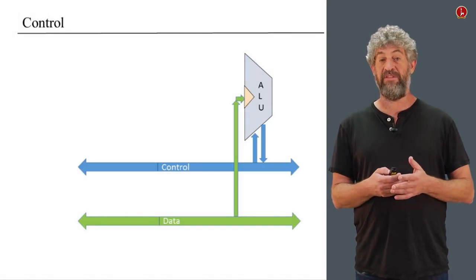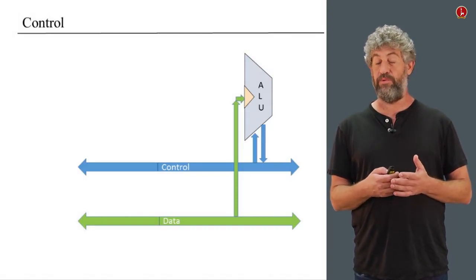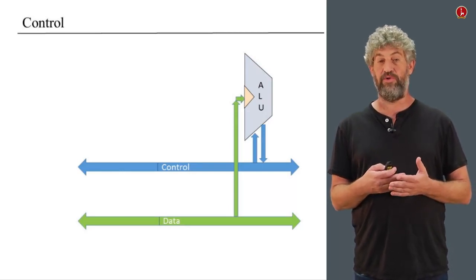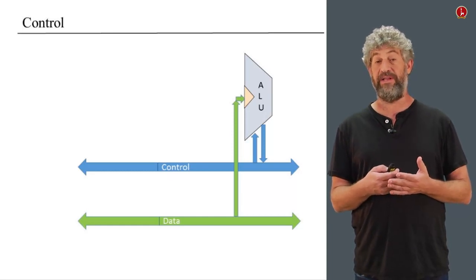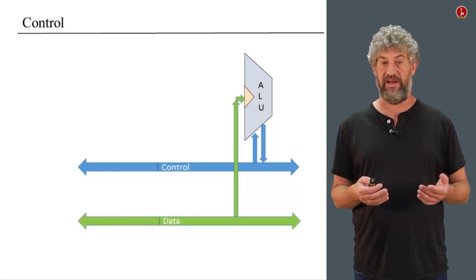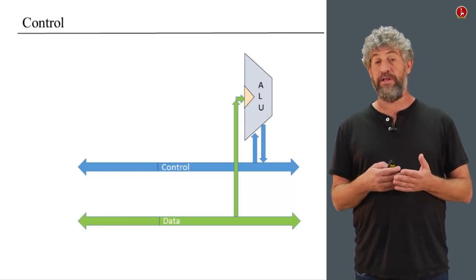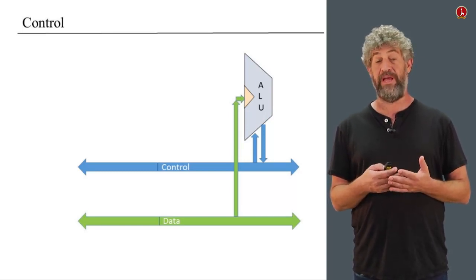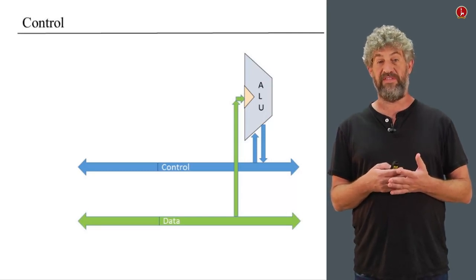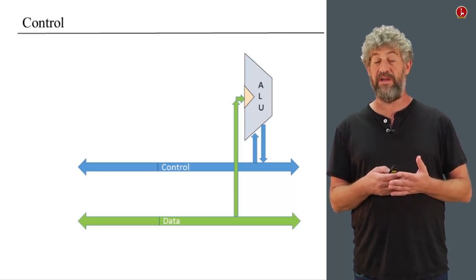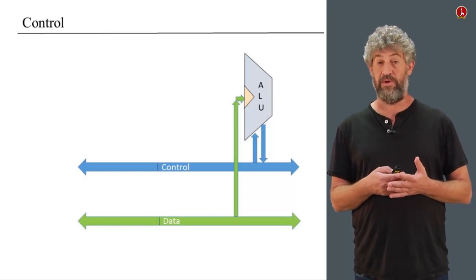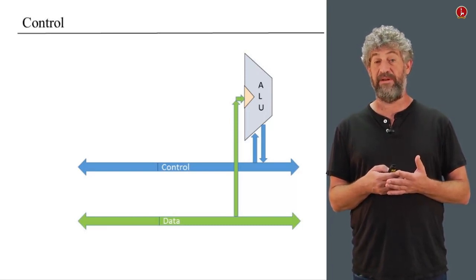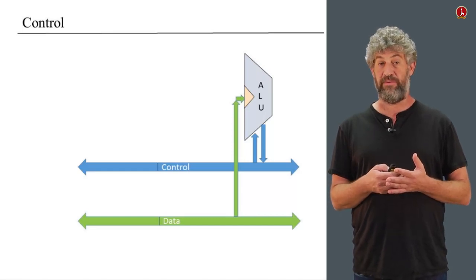There is one other type of information that the ALU needs to be connected to: the control bus. On one hand, the ALU needs to know what kind of operation it is performing, so it gets information from the control bus specifying the type of operation. On the other hand, according to the results of the arithmetic or logical operations, it needs to be able to tell the other parts of the system what to do. For example, if it sees that a certain number is greater than zero, that could control the jump to the next instruction. So we also need to take some information from the ALU and feed it back to control the rest of the system.